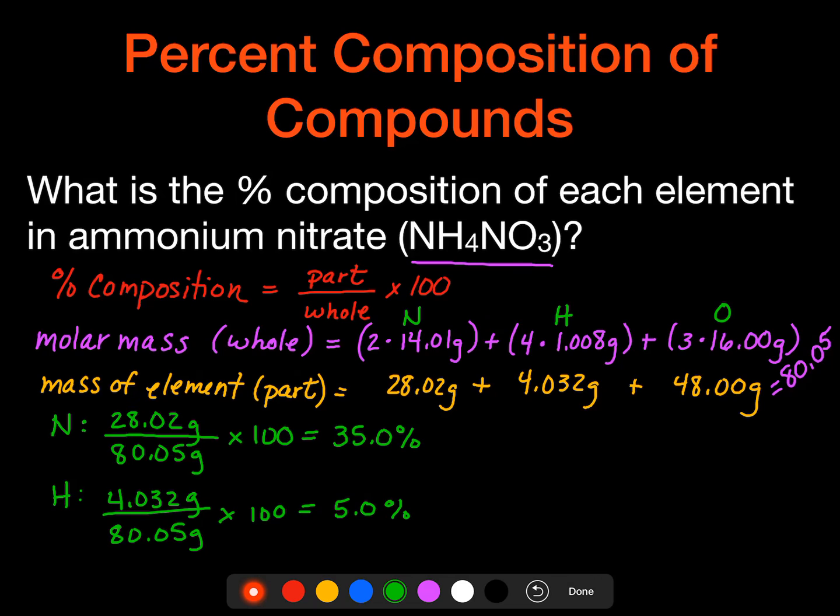And then finally, we should expect that the remainder should be 60% since we have already accounted for 40%. And so when we go to do the last one, we still want to double check. Every once in a while we'll be off just due to rounding, just barely. But in this case, oxygen was 48 grams divided by our 80.05 grams for the molar mass times 100, and I get 59.96%. And I think that we are close enough, we can say that that is definitely 60.0% when we round all of these values to the same place value.